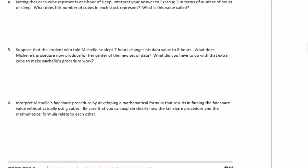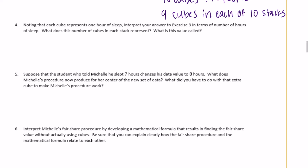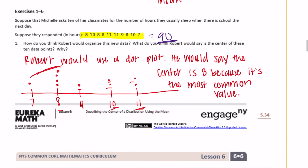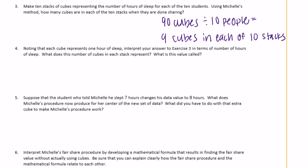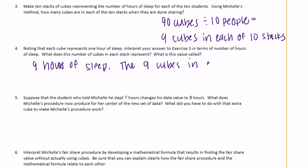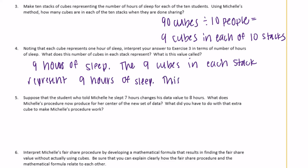Question 4: Noting that each cube represents one hour of sleep, interpret the answer from exercise 3. We added all the hours of sleep and got 90 total. When distributed equally, each person is represented as sleeping 9 hours. The 9 cubes in each stack represent 9 hours of sleep. This value is called the mean.